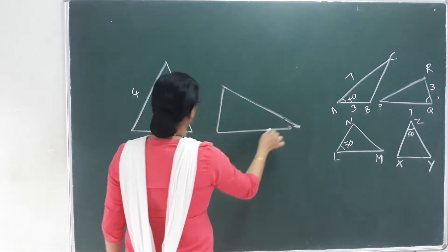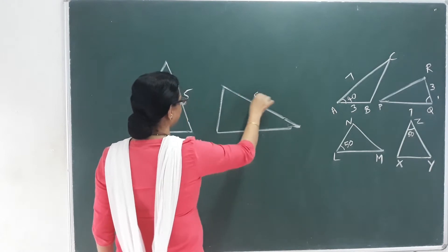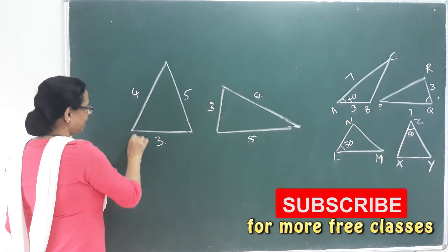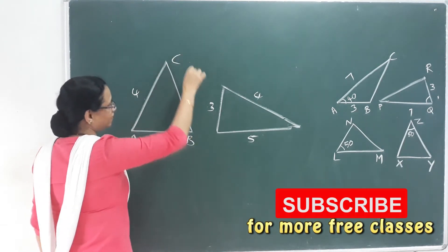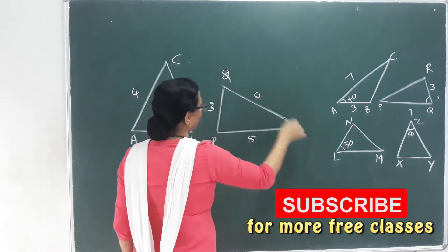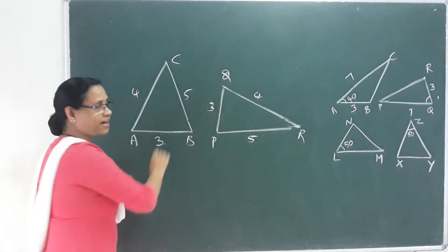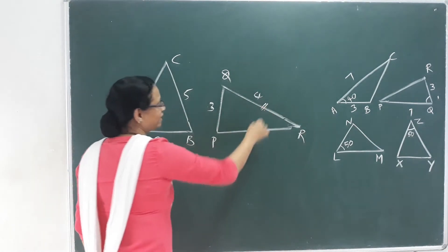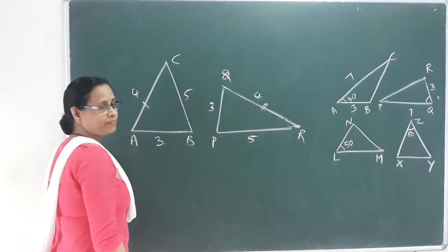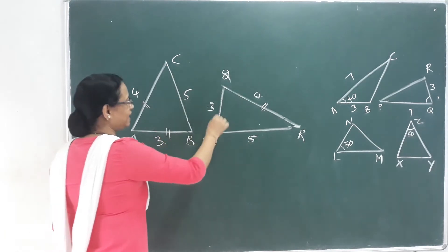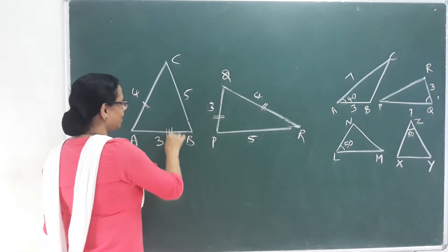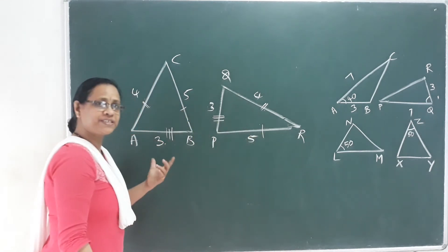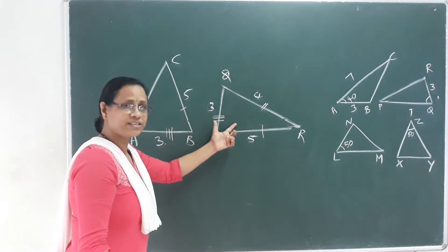This is the second triangle. The sides are 5, 4, and 3. So the corresponding sides are 1 and 5. These two triangles are similar. The two triangles are equal: side 4 equals side 4, side 3 equals side 3, and the hypotenuse side is equal. So the two triangles are equal.